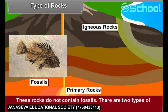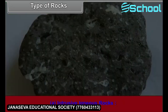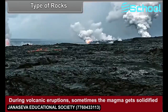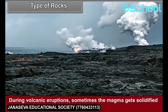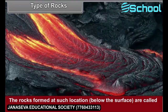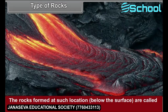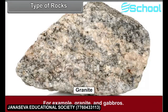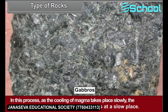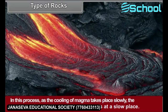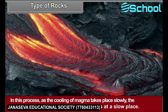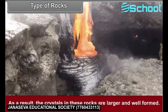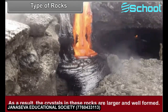There are two types of igneous rocks. Intrusive igneous rocks: During volcanic eruptions, sometimes the magma gets solidified below the Earth's surface. The rocks formed at such locations below the surface are called intrusive igneous rocks — for example, granite and gabro. In this process, as the cooling of magma takes place slowly, the process of crystallization also proceeds at a slow pace. As a result, the crystals in these rocks are larger and well formed.